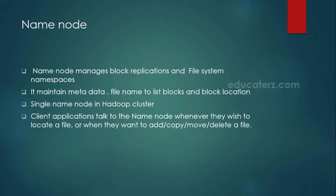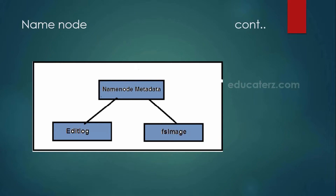Your name node is responsible for block replications, load balancing, and all of these things. The name node maintains very important metadata as part of the name node machine. When I say this metadata, it consists of two things: one is the edit logs, and another one is the FS image. The combination of edit logs and FS image we call it as metadata.